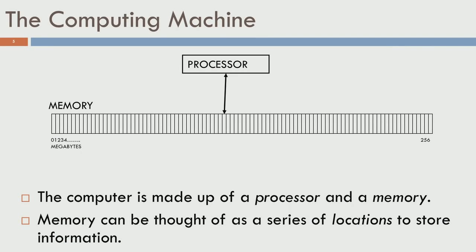We have a processor and memory, and this is what makes any computer. You can think of memory as a series of locations to store information. For example, if we have 256 megabytes of RAM, it would be laid out in some order and you can address them as location 0, location 1, up to 256 megabytes, just like houses numbered in a line.